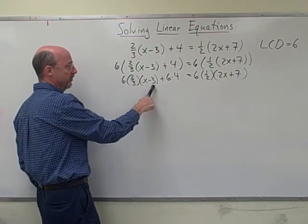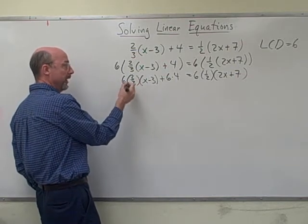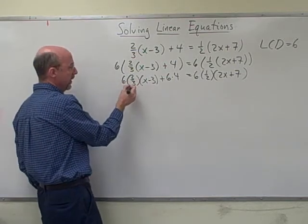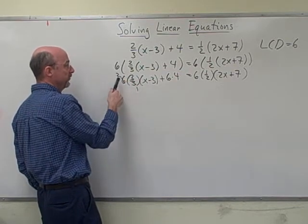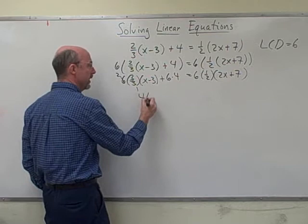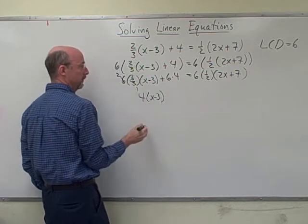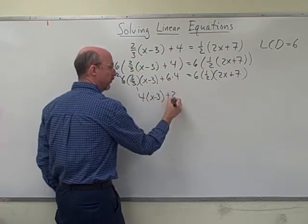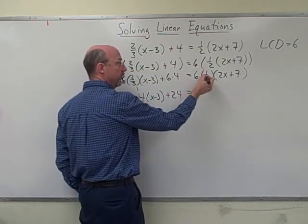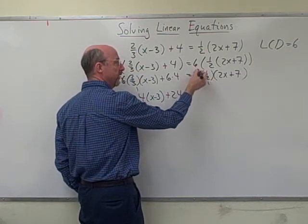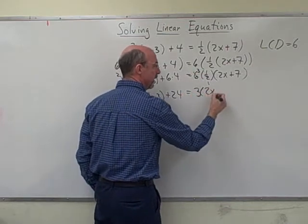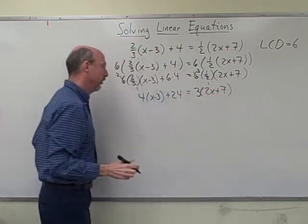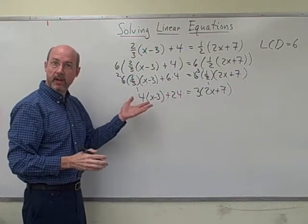Now I'll do all my multiplications. So I have six times two-thirds times x minus three. Well, I can simplify this before I multiply because three goes into three once and three goes into six twice, so this is really just four times x minus three. Six times four, of course, is 24. Over here, two goes into two once, and two goes into six three times, so this is just three times 2x plus seven.